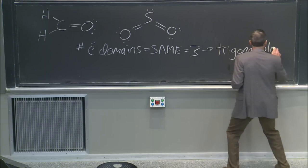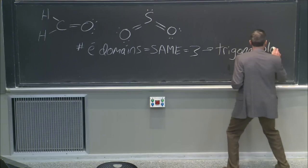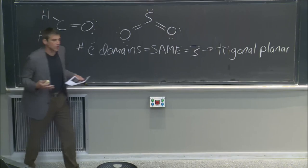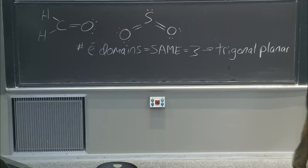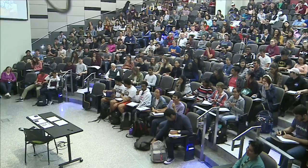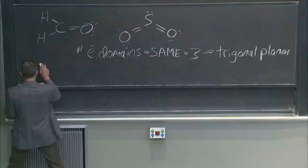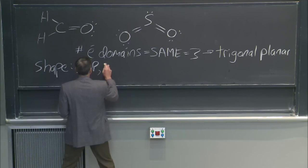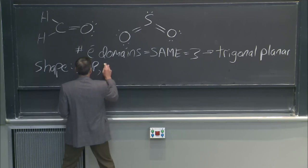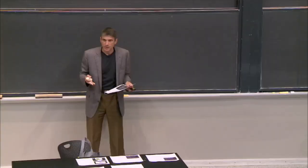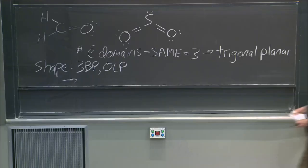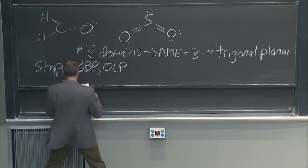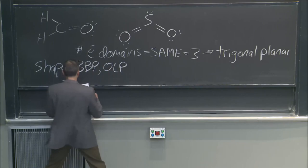I was also telling you about repulsion order at the same time, and I put the wrong thing in the table. What the table was about was the number of lone pairs. So if I've got three bonding pairs and no lone pairs, it's going to be a trigonal planar shape.